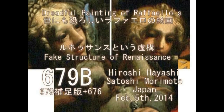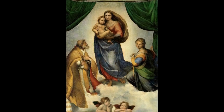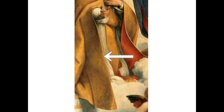世にも恐ろしいラファエルの絵、ルネサンスという虚構について話します。これは補足版です。森本さんから補足してくれということですので、補足しておきます。ここに絵が書いてあるんですけども、この絵を逆さまに見てほしいということなんですね。AとBとしておきます。Aの方を見ますね。